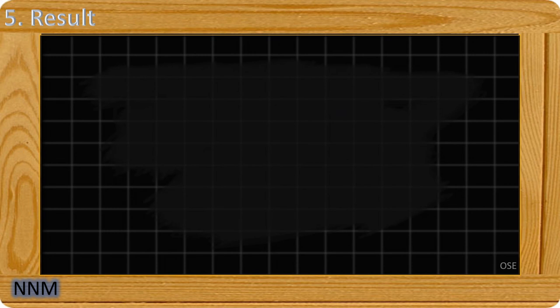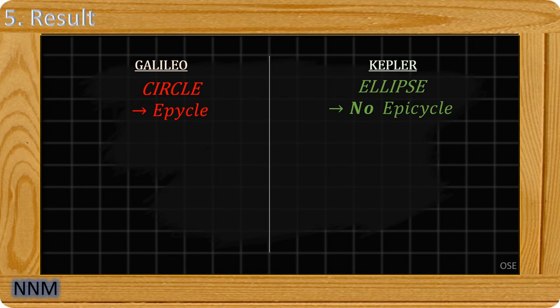Galileo wanted circular orbits. To remain consistent he needed to add epicycles. Kepler found another solution with the ellipses, there was no longer any need for epicycles.